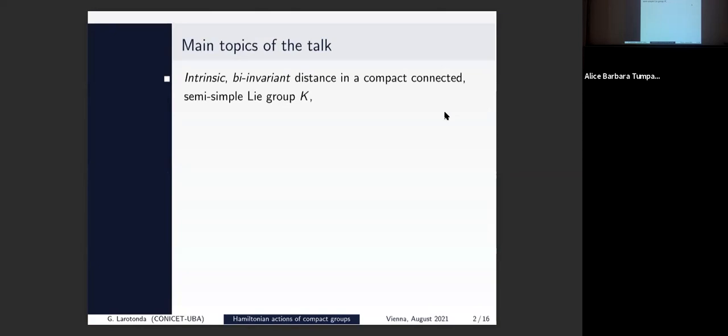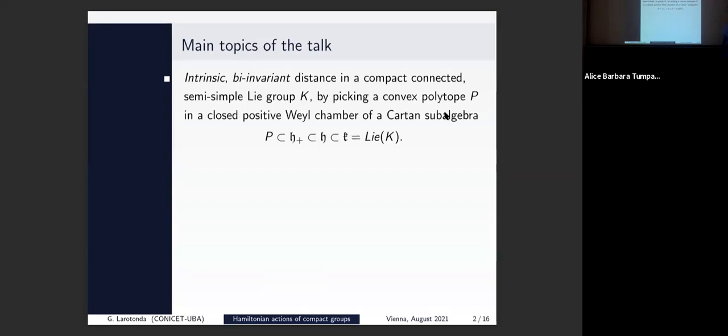Not just any such distance, because there are a lot of ways to fabricate such a distance, but a distance that is produced by picking a compact polytope in a closed positive Weyl chamber. So this is kind of a mix of differential geometry and complex analysis. We really attacked the problem for strictly convex or smooth norms, where there is this kind of uniqueness of geodesics.